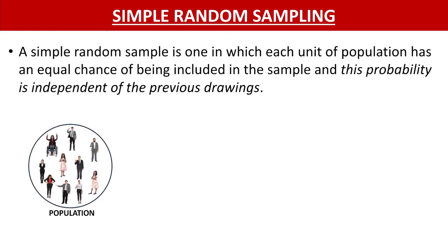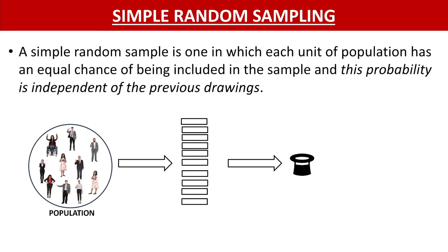Let me give you an example of simple random sampling. I have a population of size 10 and I want to get a sample size of 3. What I do is make 10 chits of paper and write the names of all 10 persons on each chit, then put them in a box or hat and randomly choose any 3 chits. Whoever's name is on that chit will form part of my sample. This is simple random sampling.